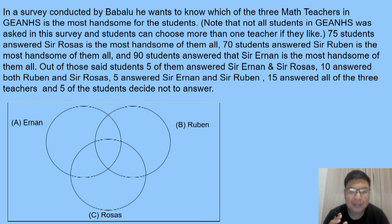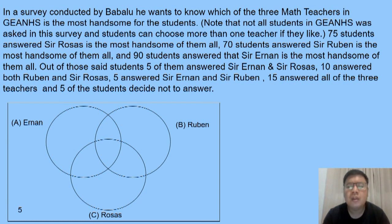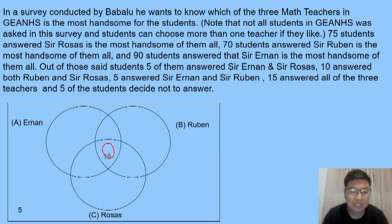The first step is to identify the given, starting at the bottom of the problem. Five students decided not to answer, so we place that value outside the three circles but inside the rectangle, since those inside the circles are the students who answered. Then, 15 answered all three teachers — we place 15 at the intersection of all three circles.